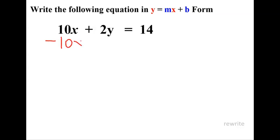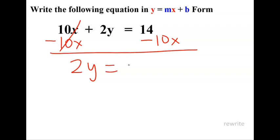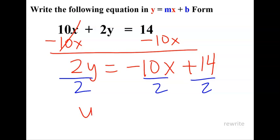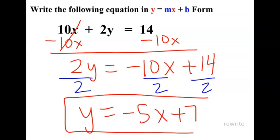Let's try another one. Let's see, I'm going to subtract 10x first. And this time, just to be different, I'm going to write my x term first. Negative 10x and my positive 14 last. Now I'm going to divide by my coefficient. I'm going to check my signs. Y equals negative 5x plus 7.